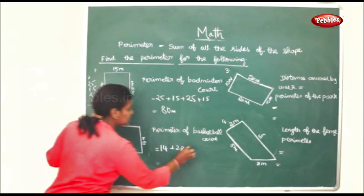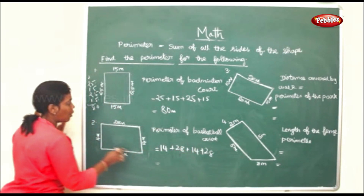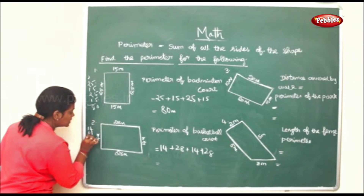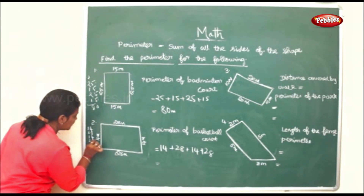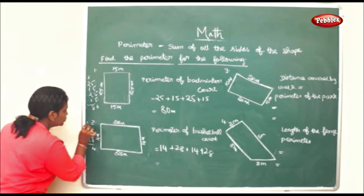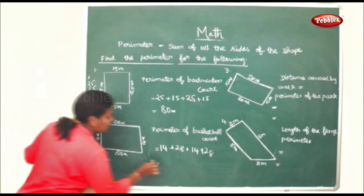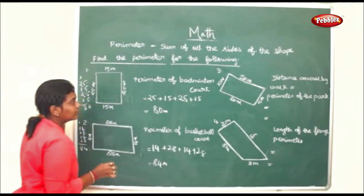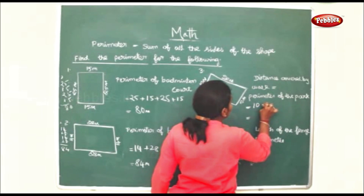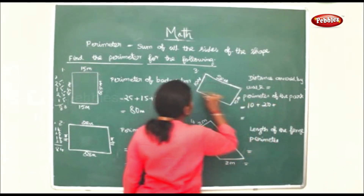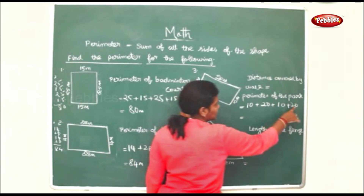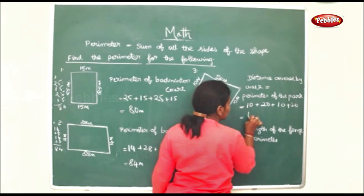The perimeter of this basketball court would be 14 meters plus 28 meters plus 14 meters plus 28 meters. Adding all the sides: 14 plus 28 plus 14 plus 28 equals 84 meters. The perimeter of the park will be 10 plus 20 plus 10 plus 20, which equals 60 meters.